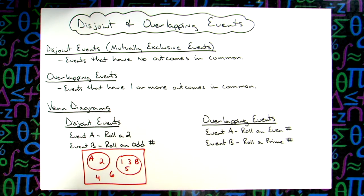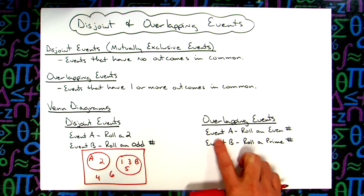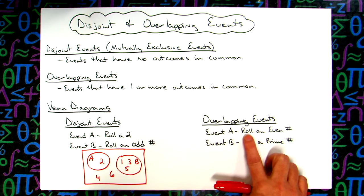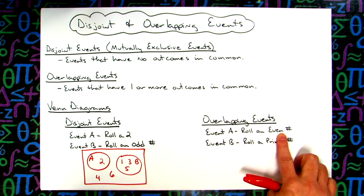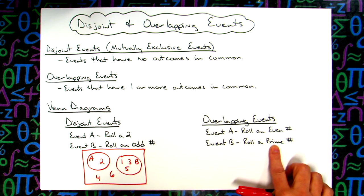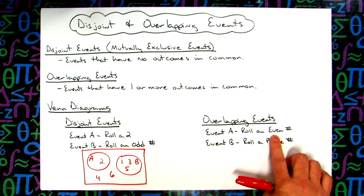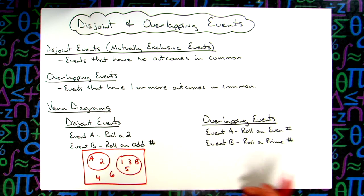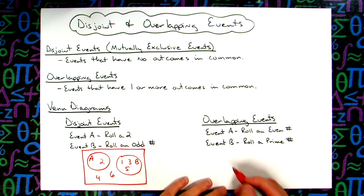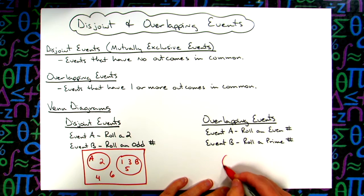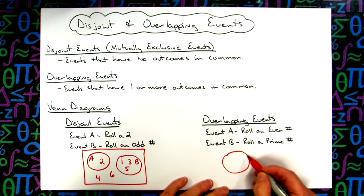Now on overlapping events, let's take a look at maybe event A being rolling an even number and event B is rolling a prime number. Well, we do have one prime number that is even and that's two. So there would be one or more outcomes that it would have in common. So my two circles for my Venn diagram are going to have to overlap.